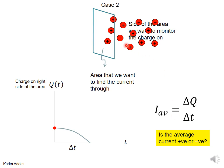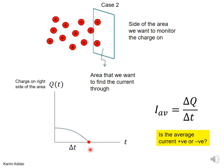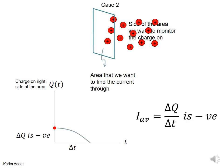Case 2: you still have positive charges crossing the area, but now they all exist on the right side at time zero. So the charge on the right side starts as a positive value. As time goes on, the amount of positive charge on the right side decreases because some charge crossed the area. So delta q is negative, meaning the average current is a negative current. Both cases involve positive charges moving through the area, yet in one case the current is positive and in the other it's negative.